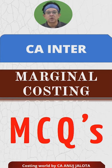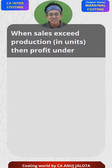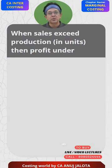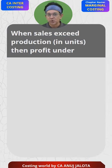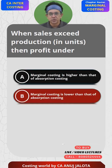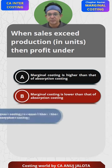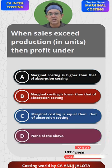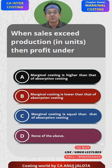Marginal costing MCQs. When sales exceed the production in units, then the profit under: A — marginal costing is higher than that of absorption costing; B — marginal costing is lower than that of absorption costing; C — marginal costing is equal to absorption costing; and D — none of the above.